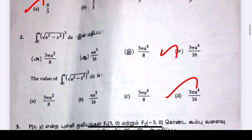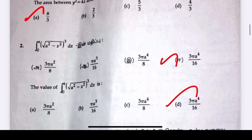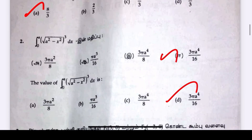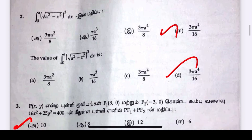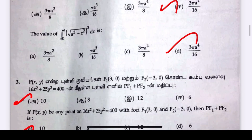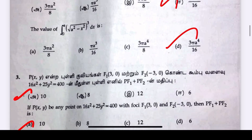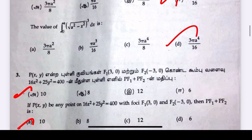First question answer is 8 by 3. Second question answer is 3π A to the power 4 divided by 16. This is for A type and B type — please check the question number.